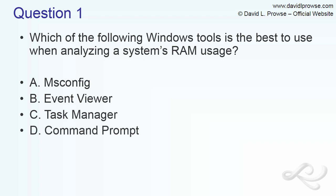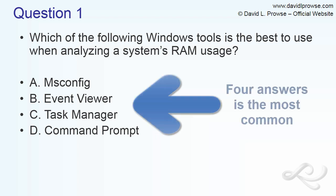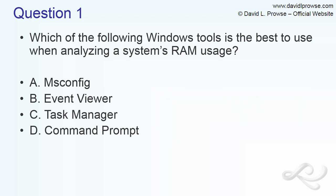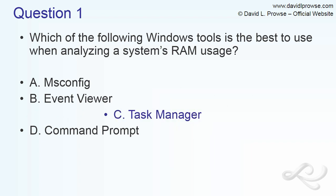These are all Windows applications, but you have to select the right one for analyzing the system's RAM usage. Most of the time you'll get multiple choice questions with four possible answers, sometimes more with E, F, and G. In this case it's four, and the correct answer is Task Manager — that's where we go to analyze a system's RAM usage. It's the best answer of the listed answers.